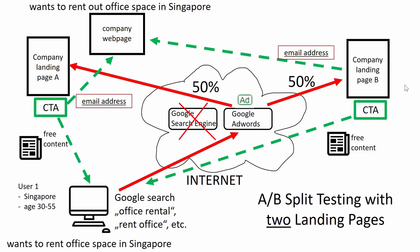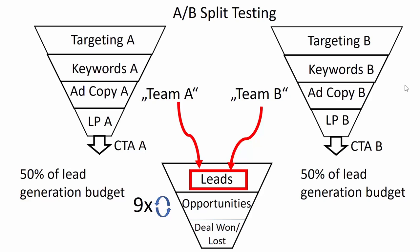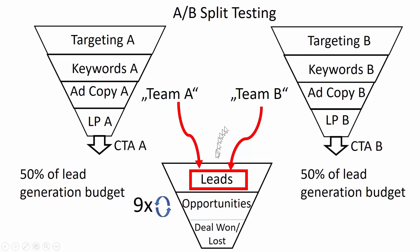This is quite revolutionary. We now have three sales funnels. First, we have the extended Google AdWords sales funnel of team A on the left-hand side, and the extended Google AdWords sales funnel of team B on the right-hand side. Both teams get 50% of our lead generation budget. Using that budget, team A generates a number of leads and team B generates a number of leads, and these leads must go through our opportunities machine — through the different sales stages — in order to find out whether there are deals won or lost.